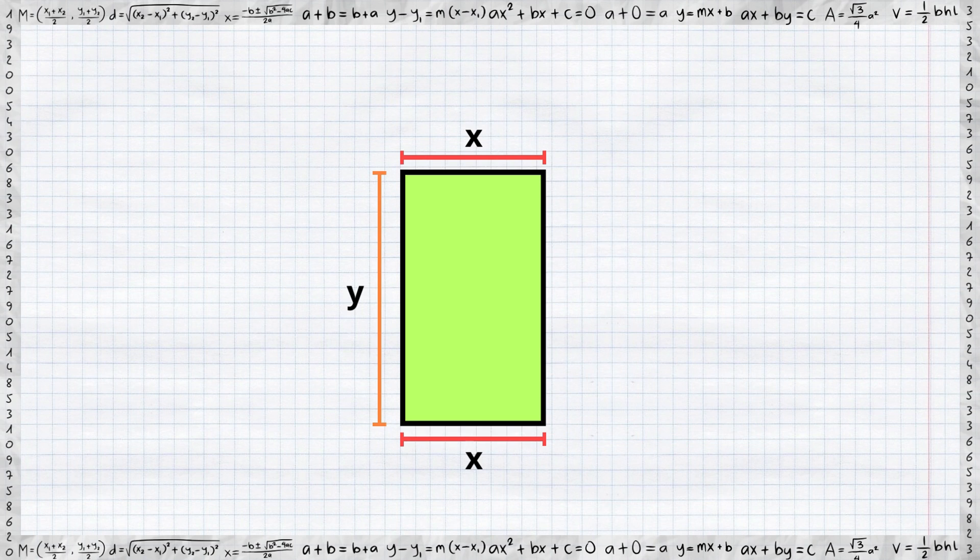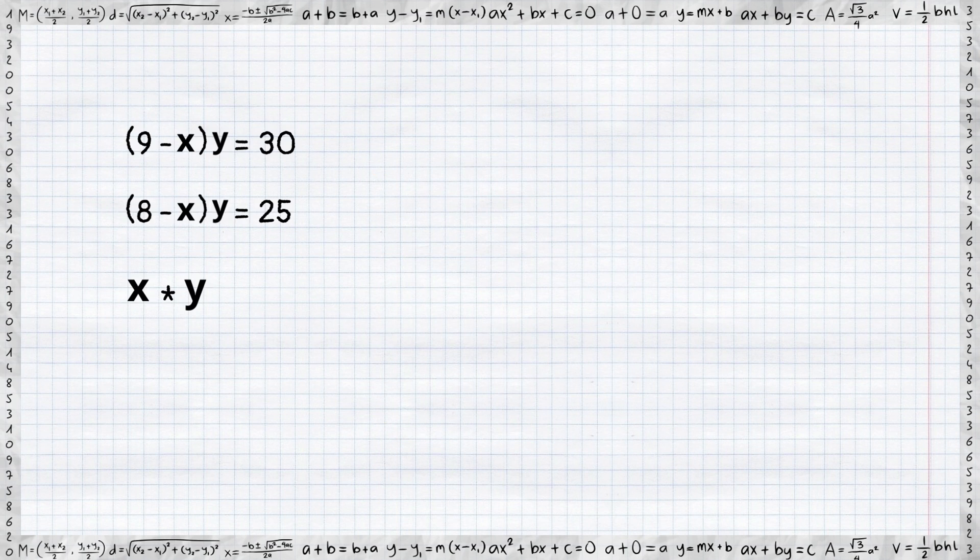To calculate the area of the second rectangle in terms of x and y is simply x multiplied by y. Now we have three equations representing the areas of these rectangles.